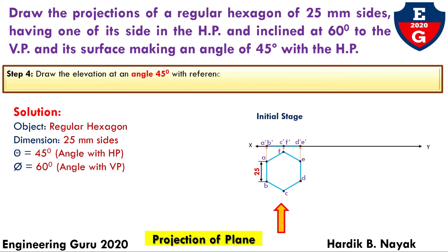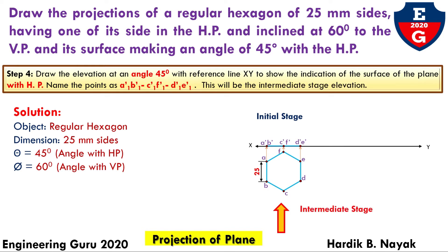Now, step number four. This will be the intermediate stage elevation. As for the intermediate stage function, we have to go for the surface inclination. In this particular case, the surface is inclined to the horizontal plane. So, we will recreate this front view at the angle theta equals 45 degrees. Draw the elevation at angle 45 degrees with the reference line XY to show the inclination of the surface of the plane with HP.